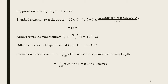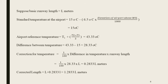At the temperature correction: 1% per degree Celsius difference between airport reference temperature and standard temperature, multiplied by runway length. That is 1 by 100 into 28.33 into L, which equals 0.2833L meters. So the corrected length is 1.2833L meters.